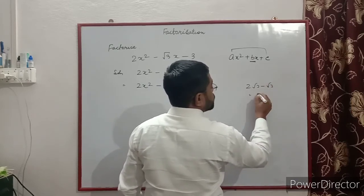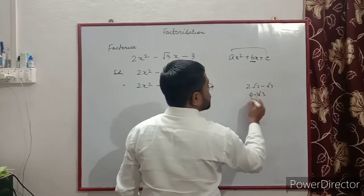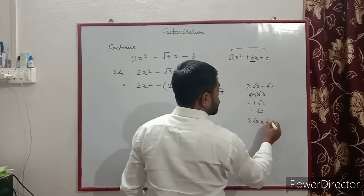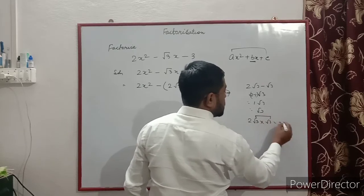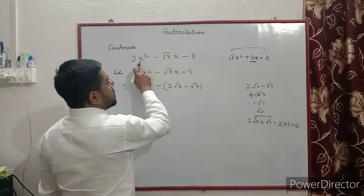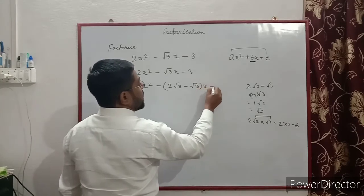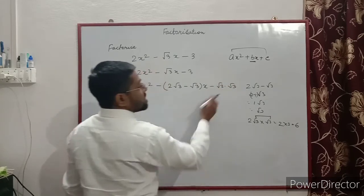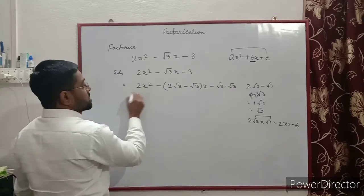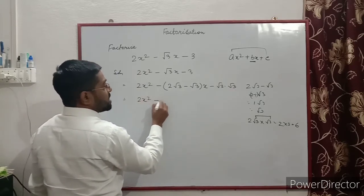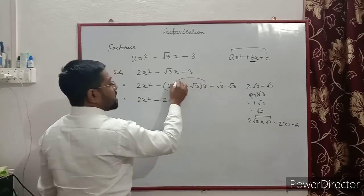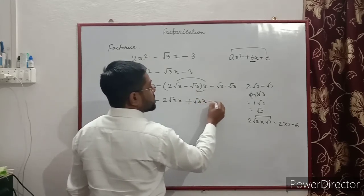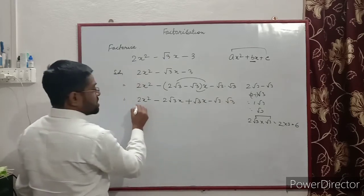We have √3·(2 − 1) = √3 for the sum, and 2√3 × √3 = 2 × 3 = 6 = a·c (since a·c = 2 × (−3) = −6). Now 3 we can write as √3 × √3. So we rewrite: 2x² − 2√3·x + √3·x − √3·√3·√3. Now this is the first group and this is the second group.